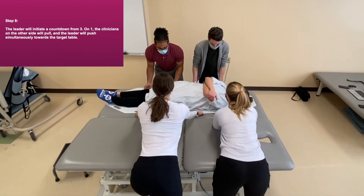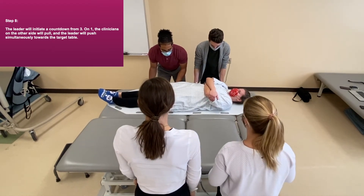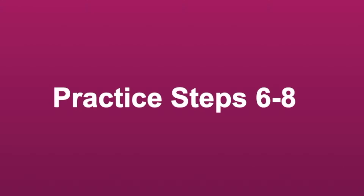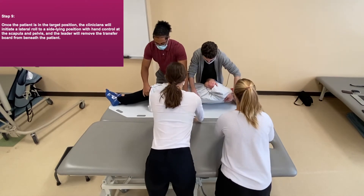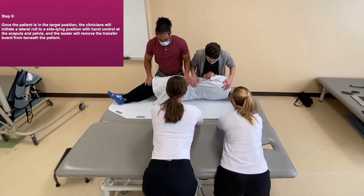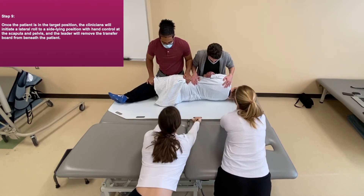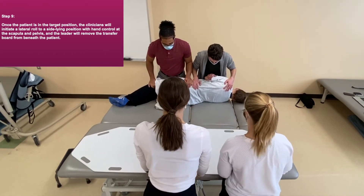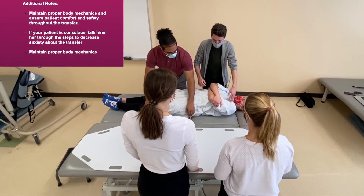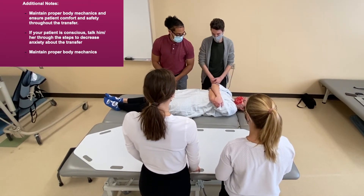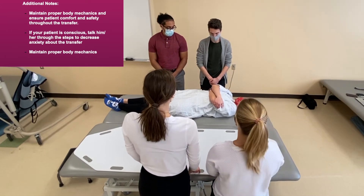The leader will initiate a count from three. On one, the clinicians on the other side will pull and the leader will push simultaneously towards the target table. Once the patient is in the target position, the clinicians will initiate a lateral roll into a sideline position with hand control at the scapula and pelvis. The leader will remove the transfer board from beneath the patient. The clinicians will then carefully roll the patient back into a supine position. It is important to maintain proper body mechanics and ensure the patient is comfortable and safe throughout the entire transfer.